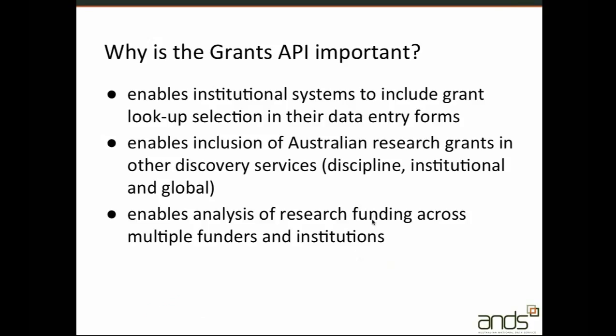We also have an API, and why is that important? There are many systems where access to research grant information is useful. For example, an institutional research portal may want to display all research grants associated with a researcher during their career, or all grants their institution has participated in even if not the administering organization. An API allows these systems to interrogate RDA and display this information within their own system. Systems that support submission and description of research data and publications could also use the API to provide lookup and validation for the grant, so there's no free-text box where mistakes can be made. Analysis and reporting systems examining research funding patterns can also use this API as a data source.